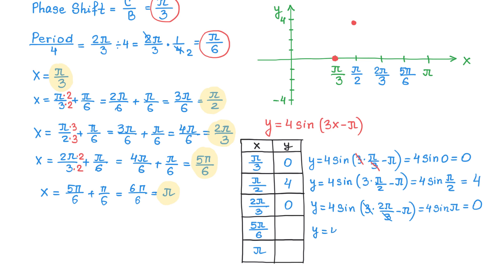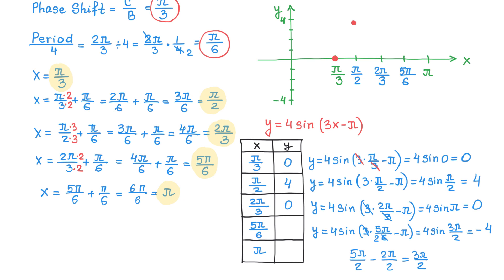For x equals 5 pi over 6: y equals 4 sine of 3 times 5 pi over 6 minus pi. Reducing 3 and 6 gives a denominator of 2. Getting a common denominator, 5 pi over 2 minus 2 pi over 2 makes 3 pi over 2. Then 4 times sine of 3 pi over 2: sine of 3 pi over 2 is negative 1, and 4 times negative 1 is negative 4. For the last point, y equals 4 sine of 3 times pi minus pi equals 4 times sine of 2 pi. Sine of 2 pi is 0, and 4 times 0 is 0.